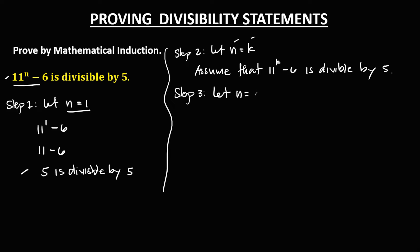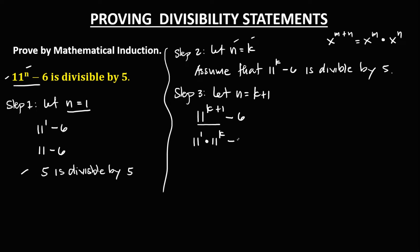For step 3, we let n equals k plus 1. From this equation, we have 11 to the power k plus 1 minus 6. Using the laws of exponents, if we have x to the power m plus n, we can rewrite this as x to the power m times x to the power n. So this equation becomes 11 to the power 1 times 11 to the power k minus 6. Since 11 to the power 1 equals 11, then 11 times 11 to the power k minus 6.